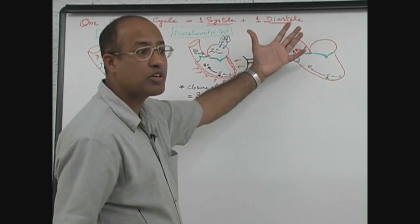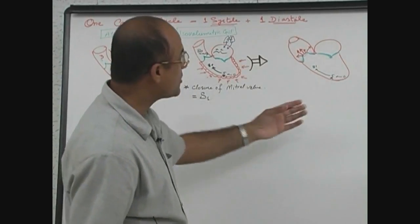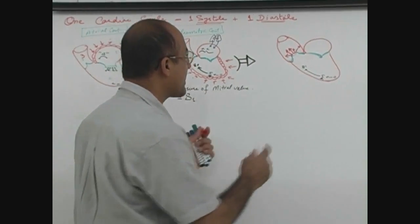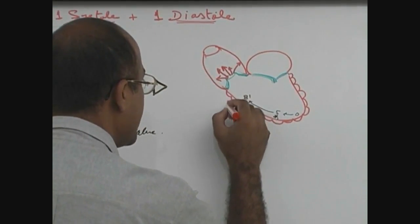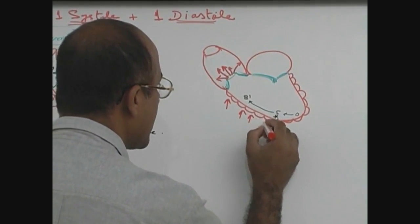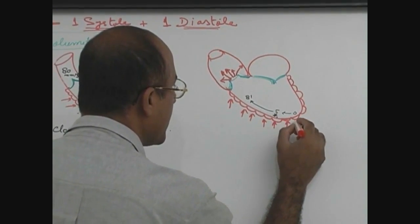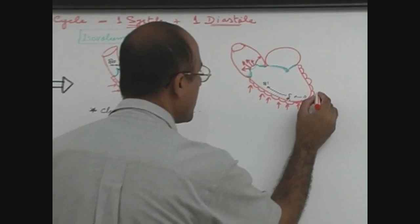As soon as aorta stretches out, the advantage is that with little increase in its pressure it can accommodate more volume. But ventricles are really aggressive and they keep on contracting; systole continues.